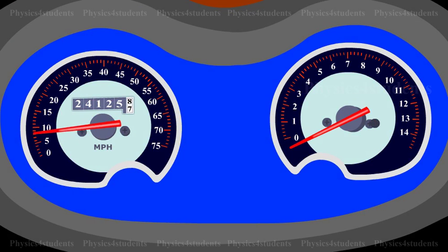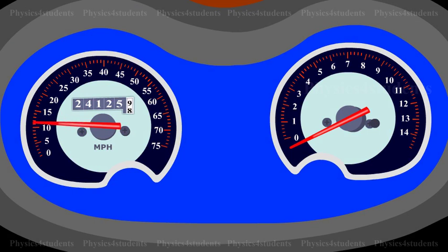A pointer attached to the drum moves over a calibrated scale, which indicates the speed of the vehicle.